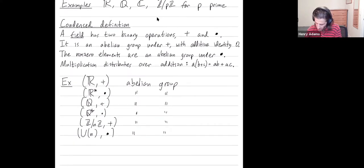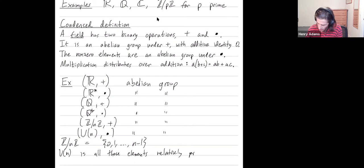What are the elements of Z mod nZ? It's zero all the way up to n minus one. Un is not all of those elements. Un is all of those elements of Z mod nZ relatively prime to n, meaning no common divisors with n.